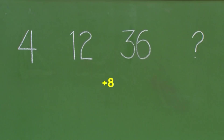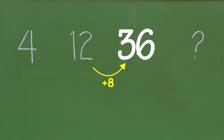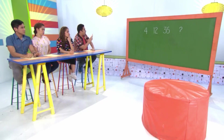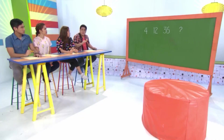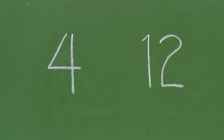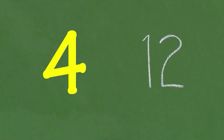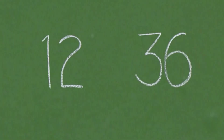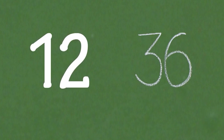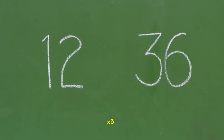Bakit kailangan mag-add ng 8 para makuha ang kasunod na term? 12 plus 8 is 20? Hindi 20 ang kasunod na term. Hindi tayo dapat nag-add, kundi nag-multiply. Ano ang imumultiply mo sa 4 para maging 12? 3. At ano ang imumultiply mo sa 12 para maging 36? 3 din!